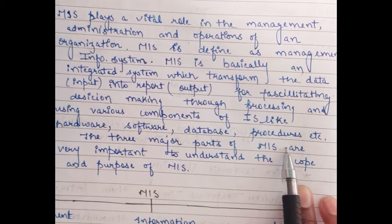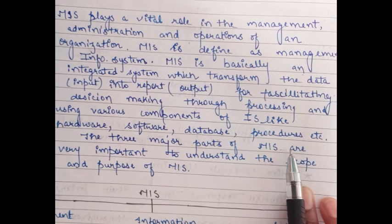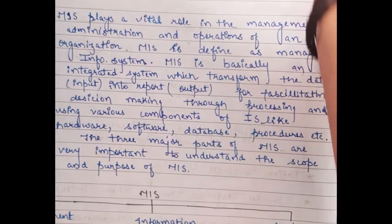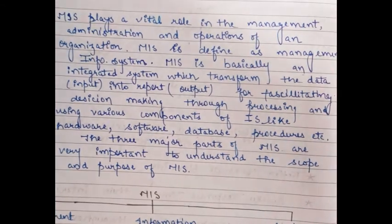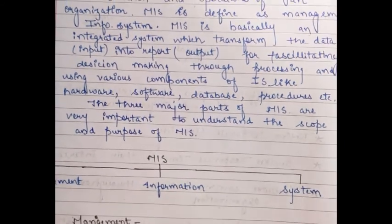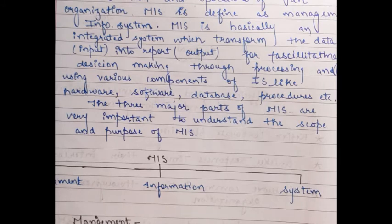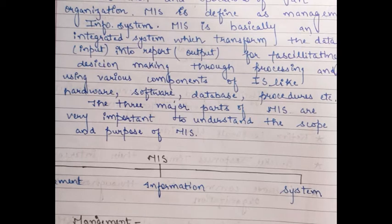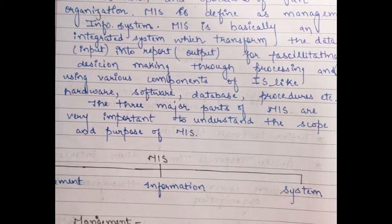MIS is a combination of three words. The first is management, the second is information, and the third is system. I will explain each of these in detail.